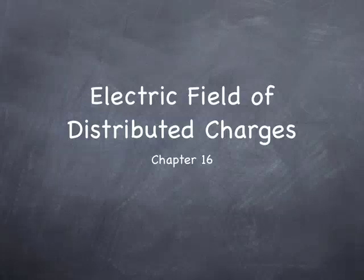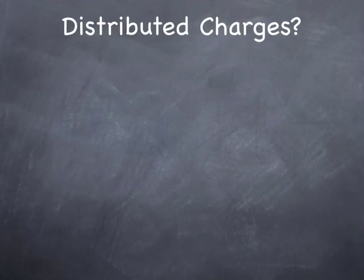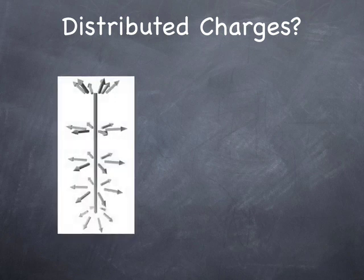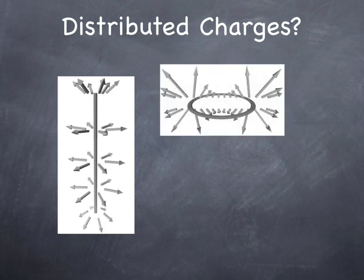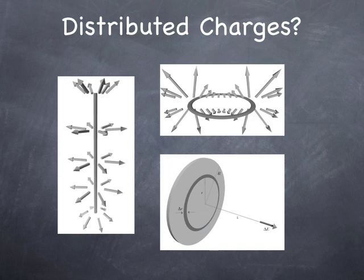Welcome back. It's time for Chapter 16: The Electric Field of Distributed Charges. The first thing we need to figure out is what a distributed charge is — it just means that somebody has spread the charge out over some surface or throughout some volume. For example, you could spread charge over a line or a cylinder, around a ring, or on a disc. We're only going to focus on four basic shapes: three of those, plus the spherical shape.